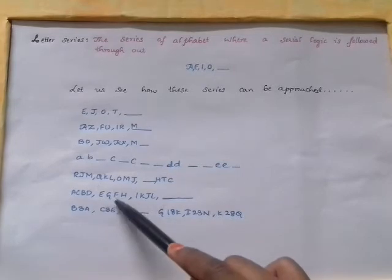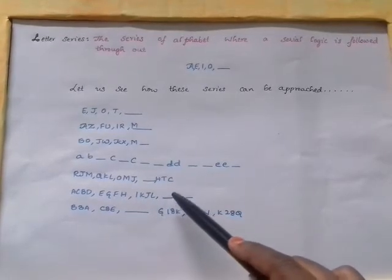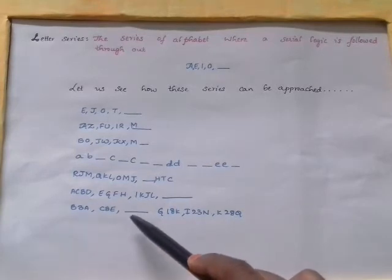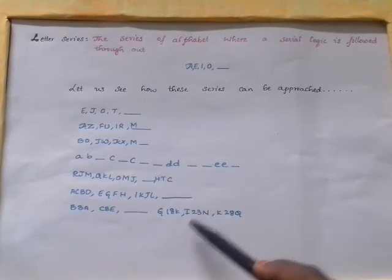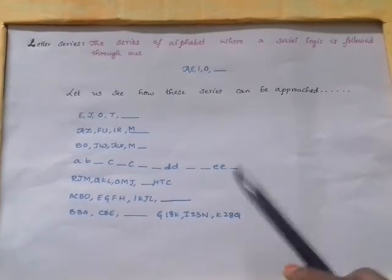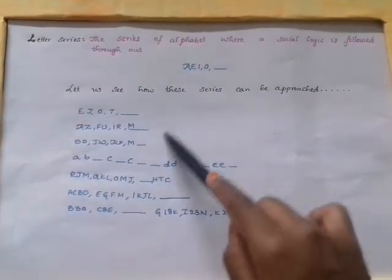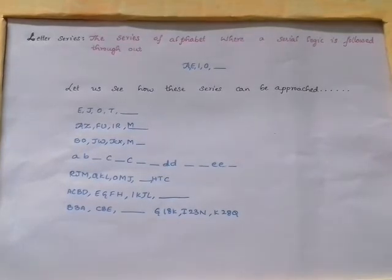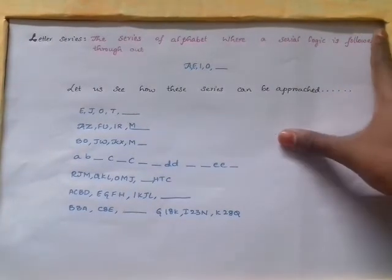The problems include: E, J, O, T dash; B3, A, C8, E dash, G18, K, I23, N, K28, Q. You can see that each of them are arranged differently. Let us go through how these can be solved.